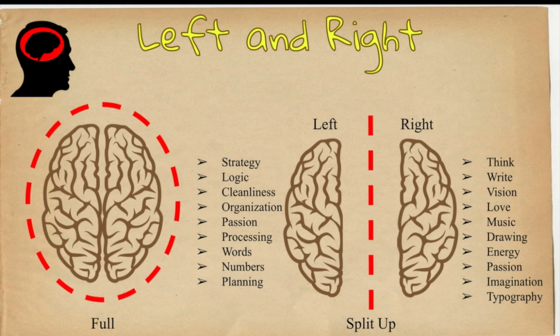Okay, the left and right. So on this little slide over here we've got a man up in the corner and that's just basically what it looks like on a human. And then we've got the full brain and the brain chopped in half. We're gonna look at the brain chopped in half. So we got the left and the right. On the left we've got strategy, logic, cleanliness, organization, passion, processing, words, numbers, and planning. Sounds kind of boring like things you learn in school or in an office so I've narrowed that down to proper and logical.